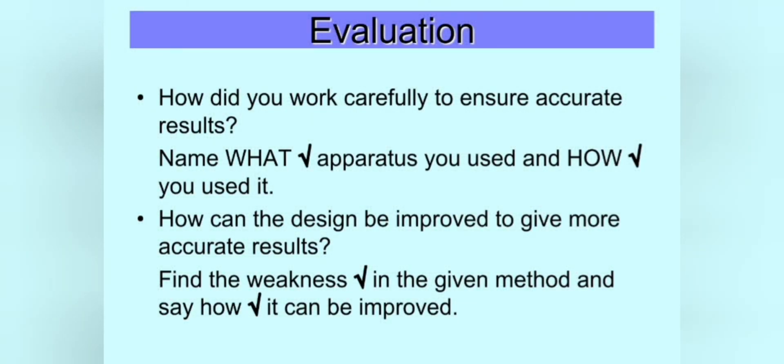The last thing is that you'll be asked to evaluate the experiment. In other words, questions like how did you work carefully to ensure accurate results? Now when you get asked something like this, you need to name what apparatus you used and how you used it. For example, you can say that you used a syringe to measure exactly 20 milliliters of vinegar or that you used a thermometer to make sure the water stayed at 60 degrees Celsius.